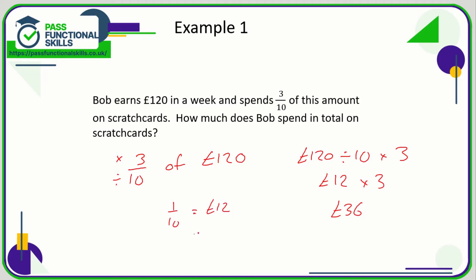So by dividing by 10, we've worked out what one-tenth is. One-tenth is £12, so therefore three-tenths is three times that amount, which is £36. Again, you don't really need to fully understand the logic, as long as you remember: divide by the bottom number, multiply by the top number.